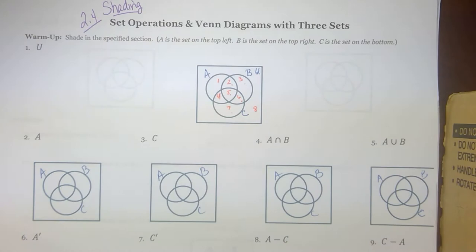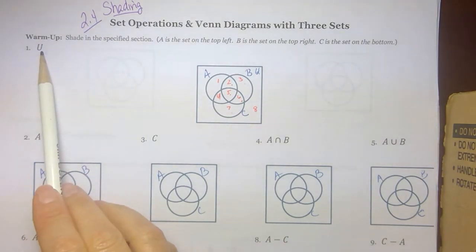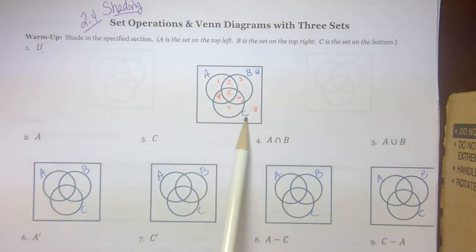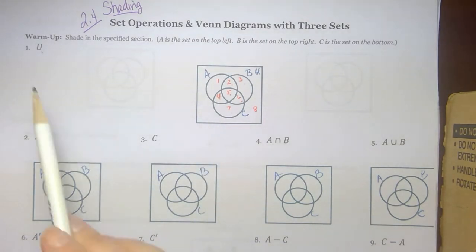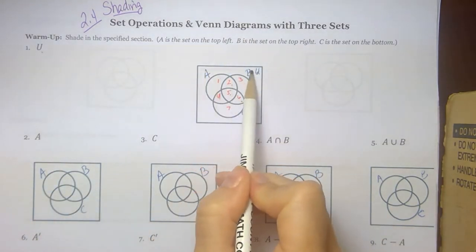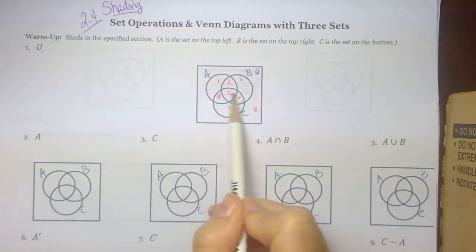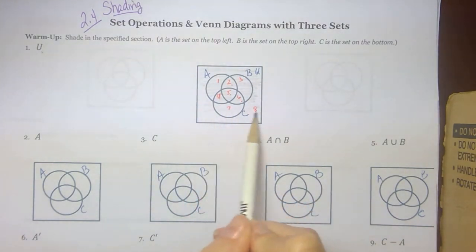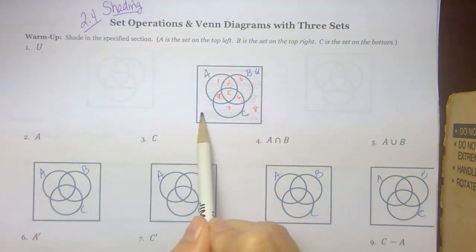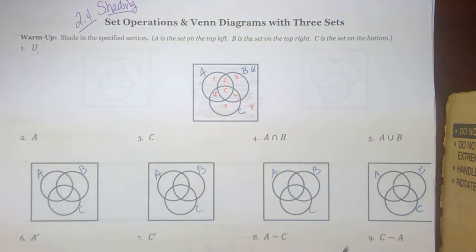We are going to start out and do some shading. For number one, this first Venn diagram tells us to shade the universal set. When I shade the universal set, I am shading everything — the entire box, all eight regions.